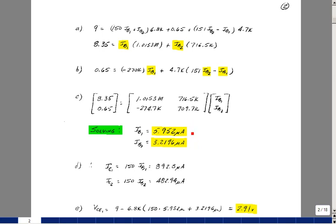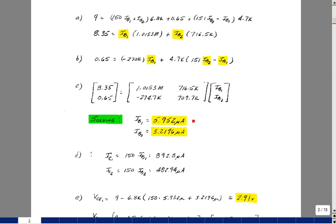and so I found that IB1 was 5.952 microamps, and IB2 was 3.2196 microamps. And so that's positive, so that checks, and that's positive, so that checks. So we're about halfway through our checks then.